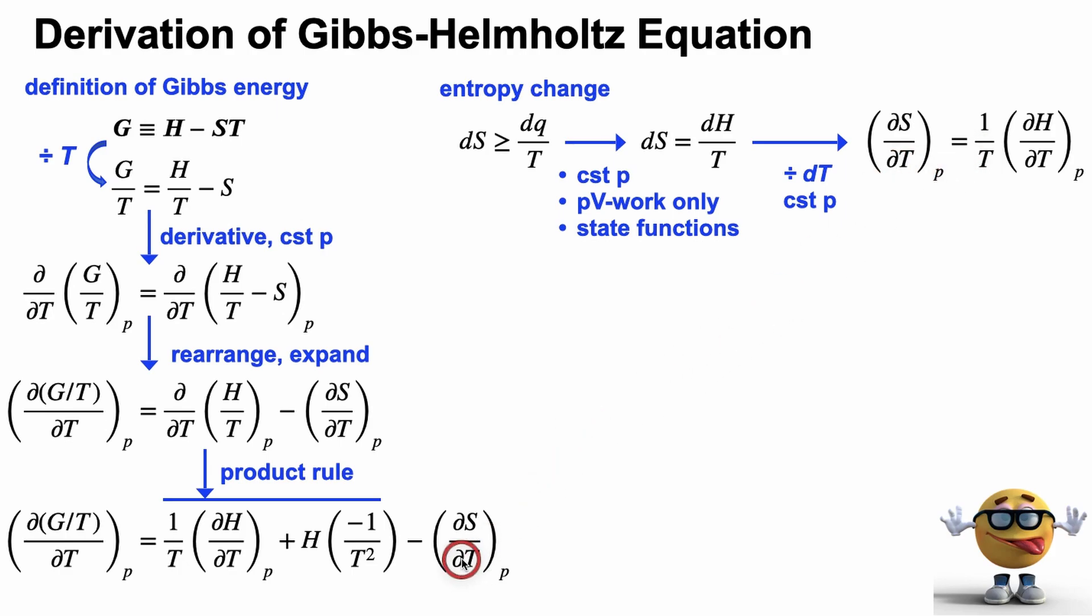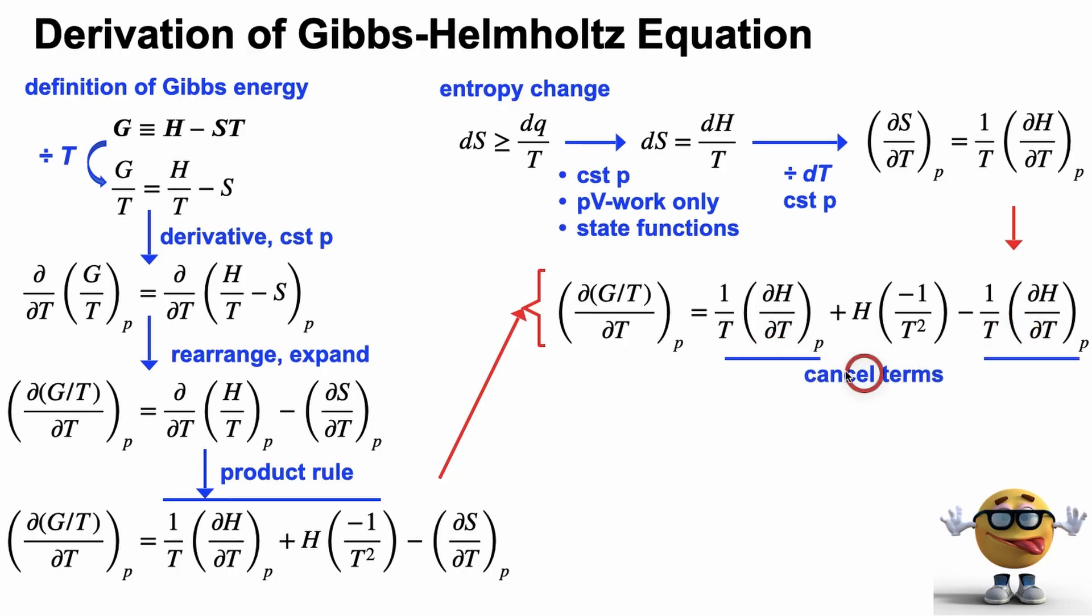And look at this, these two derivatives are exactly the same. So we can take this equation here, and substitute into here. And even though this might look complicated, these first and third terms on the right-hand side, they cancel. So that's cool. And that leaves us with this equation right here, which is essentially the Gibbs-Helmholtz equation.